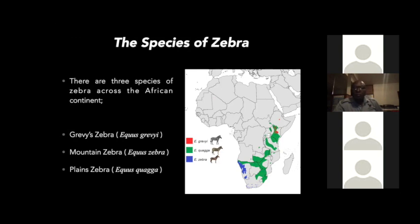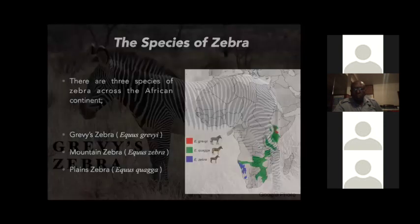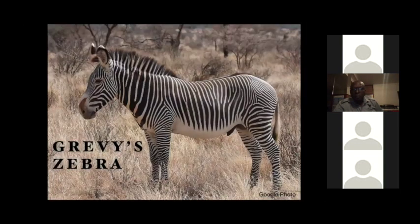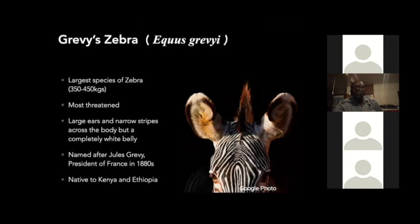Now I'll go through each species of zebra individually. What you see here is the Grévy's zebra, easily identified by its narrow black stripes and very prominent white belly. The Grévy's zebra is the largest of the zebra species and the largest in the equus genus, weighing about 350–450 kilograms. It is considered the most threatened species; according to the last IUCN count, there were about 2,000 individuals currently alive.